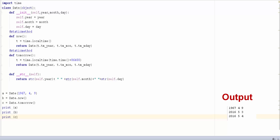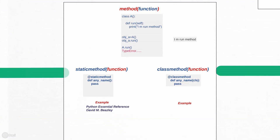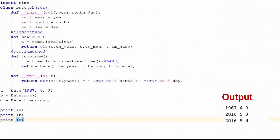I hope you now have a basic understanding of static methods in Python. A class method is very similar to a static method. A class method is defined using the classmethod decorator. If you don't know what function decorators are, please check my other tutorial on function decorators. There is hardly any difference between static and class methods in Python, except a class method has one compulsory parameter which is the class itself. I have taken the same example from static methods but changed the static method now to a class method.